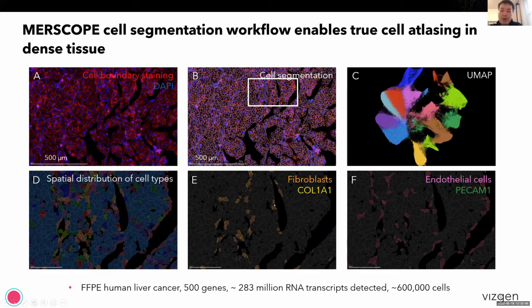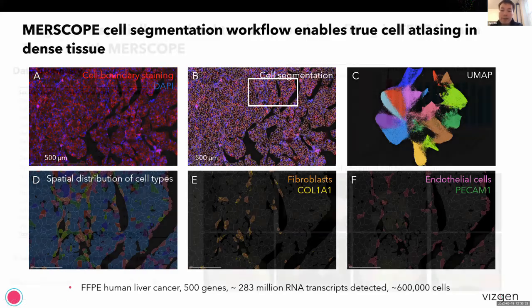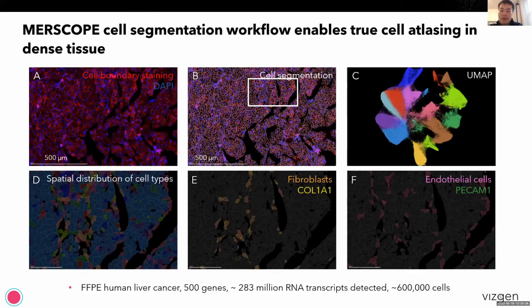I'm highlighting two major cell types here — fibroblasts and endothelial cells — with fibroblasts expressing a marker gene called Collagen 1 and endothelial cells expressing a marker gene called PECAM1. With all this capability established, it puts us at a stage where we can start doing very large-scale cell atlas efforts.